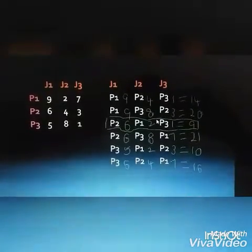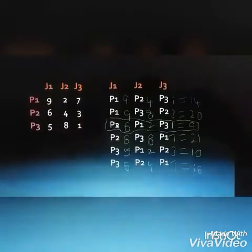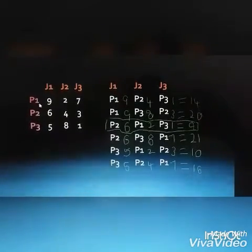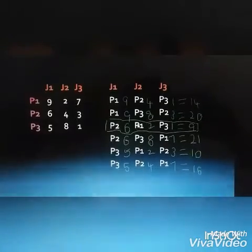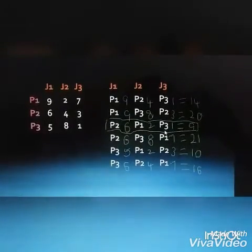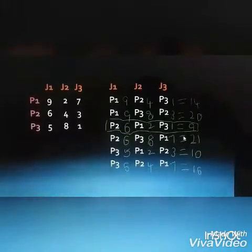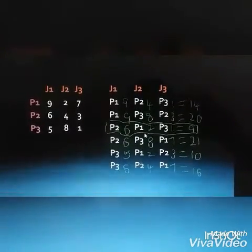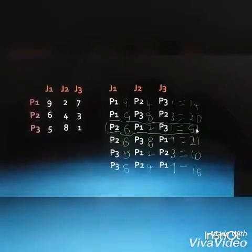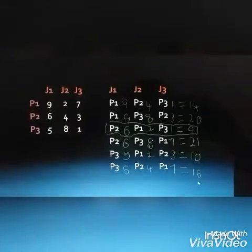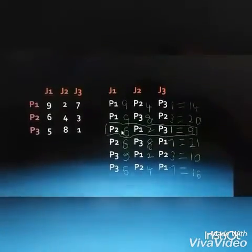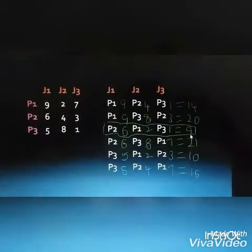We do the same for all other combinations. For Person 2, Person 1, Person 3: Job 1 to Person 2 is 6 seconds, Job 2 to Person 1 is 2 seconds, Job 3 to Person 3 is 1 second — so 6 + 2 + 1 = 9. Computing all combinations gives us totals of 14, 20, 9, 21, 10, and 6.